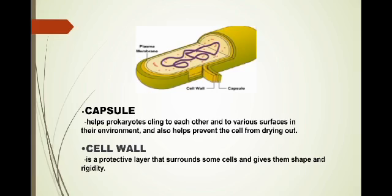And the other part of the prokaryotic cell is the cell wall. When we say cell wall, it is a protective layer that surrounds some cells and gives them shape and rigidity.